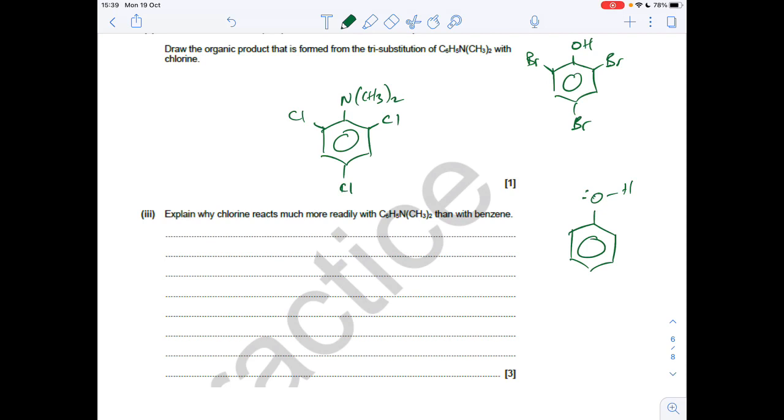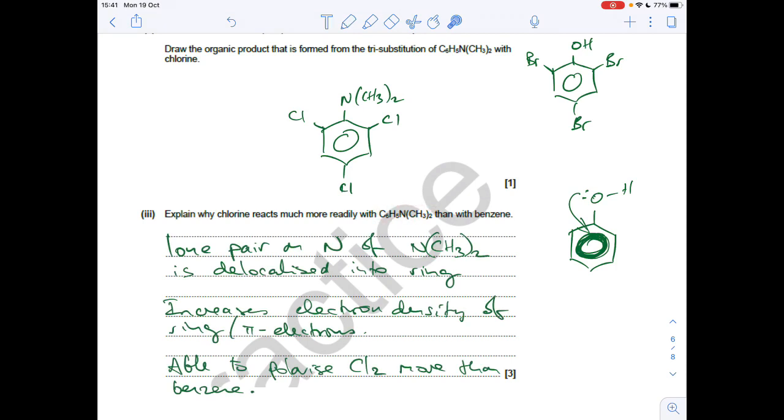Next part of the question. Explain why chlorine reacts much more readily with that molecule than with benzene. So just a reminder what phenol does. The pair of electrons on the oxygen of the OH group. They become delocalised. And essentially increase the electron density of the pi electron cloud. And so it's able to polarise things like chlorine more easily. Or you could say attract electrophiles more easily.